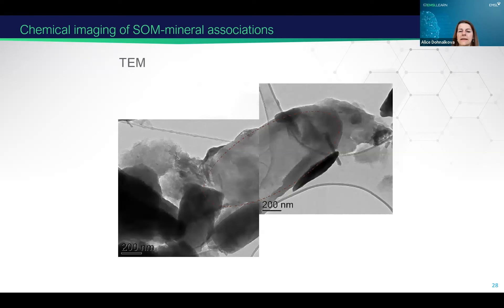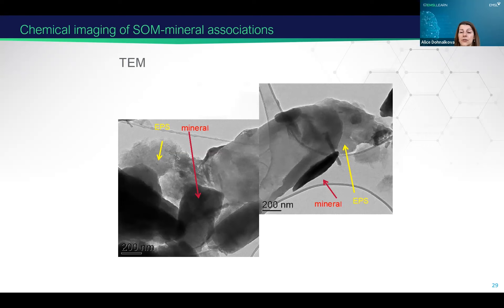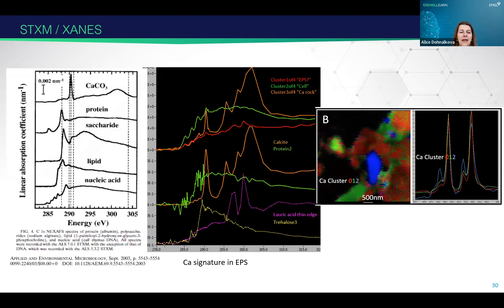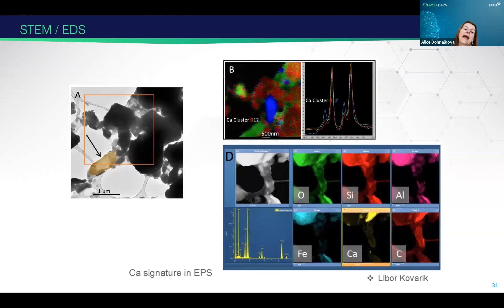You can see extracellular polymeric substance and minerals which are adhered to it. We studied how the EPS has some signatures of the minerals, which were extracting those cations. We had our standards of what to expect there in the organic carbon. This was an example of calcium calcite — so there would be some calcium we'd like to see extracted and incorporated into the EPS and newly formed organic matter.